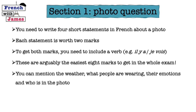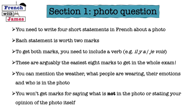You can mention the weather, what people are wearing, their emotions, or who's in the photo. So if you get stuck, there's always going to be something you can say — 'il y a du soleil', 'il pleure', 'il a les yeux marrons'. You can make things up to some extent as long as it's feasibly correct. But you won't get marks for saying what's not in the photo, or for saying 'j'aime la photo' or giving your opinion of the photo itself.